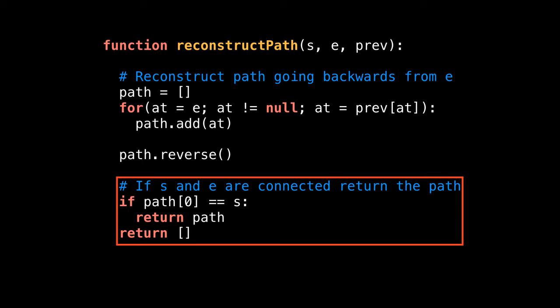Last but not least, we actually have to make sure the path between nodes s and e exists. It might not be possible to reach node e from node s if the graph is disjoint. If this is the case, then simply return an empty path.